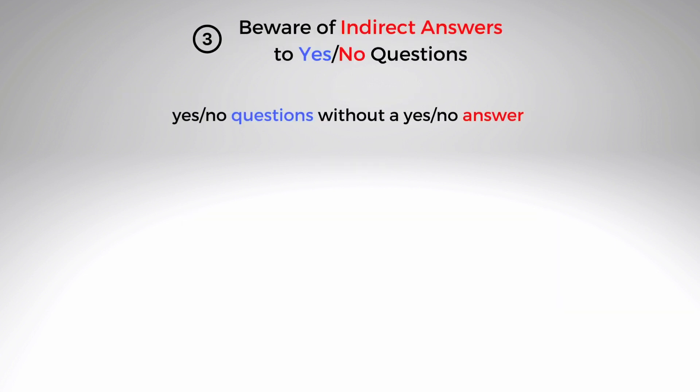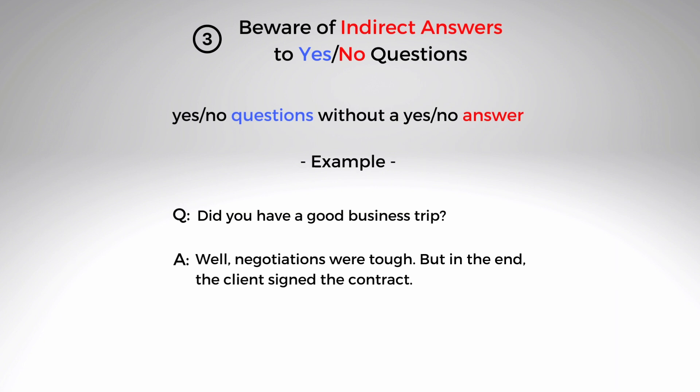Tip number three: beware of indirect answers to yes or no questions. An indirect answer is when you answer a yes or no question without a yes or no answer. For example, question: 'Did you have a good business trip?' Answer: 'Well, negotiations were tough, but in the end our client signed the contract.'